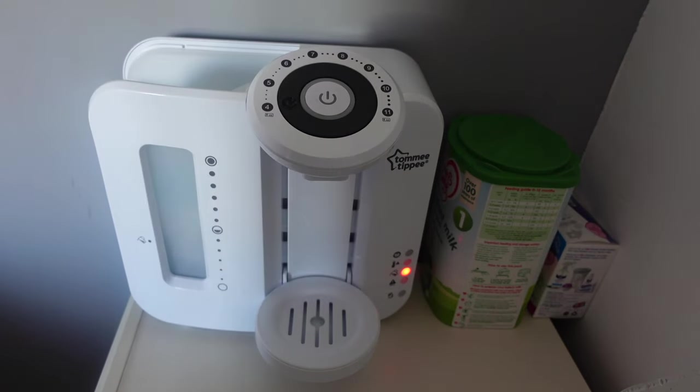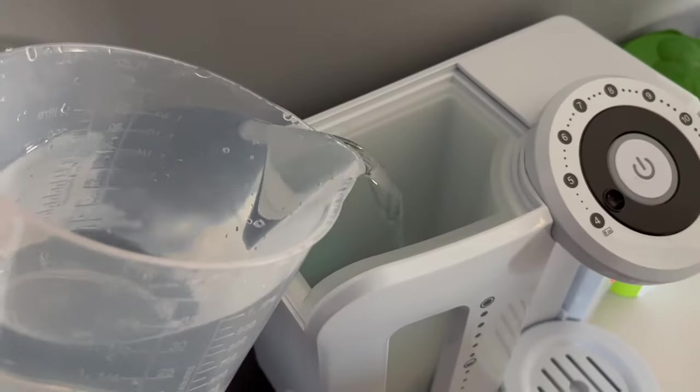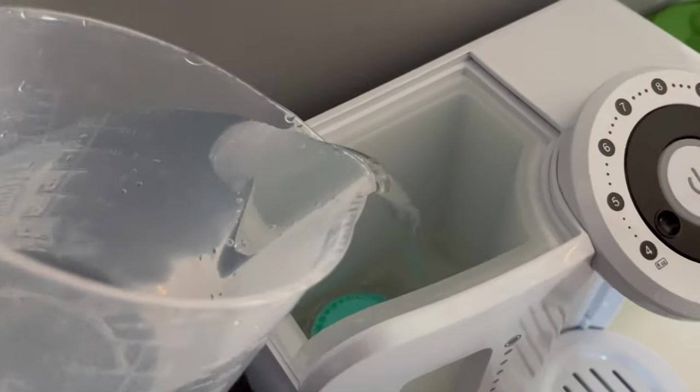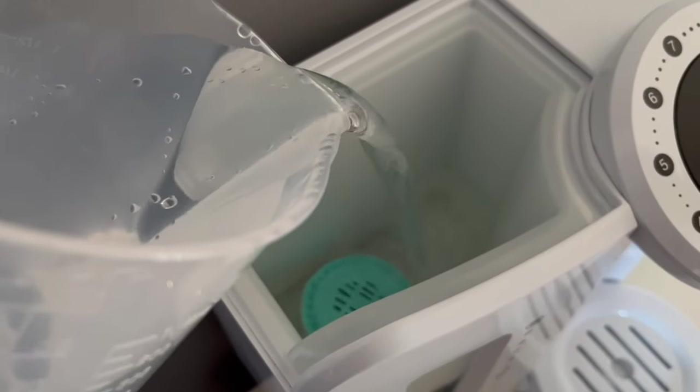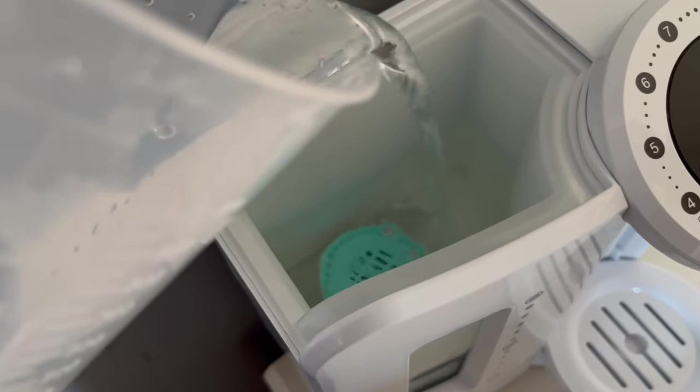I'm going to take off the top where the tank is and I'm going to fill it up with this big jug of tap water. As I'm filling it up inside, you can see this blue green round thing and that is the filter, so it will filter the tap water so that it is safe to make babies bottles with.